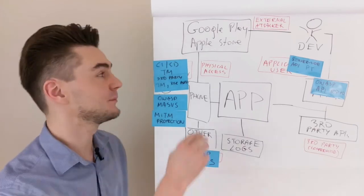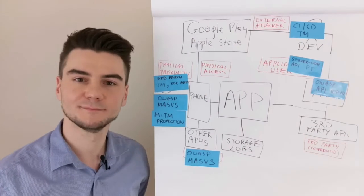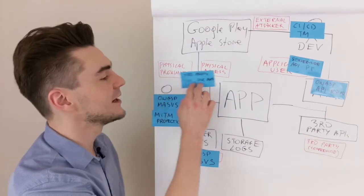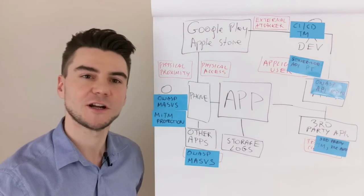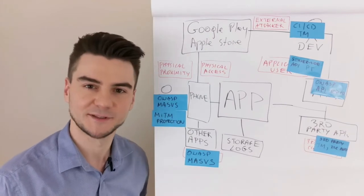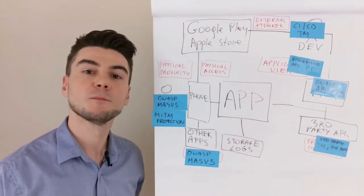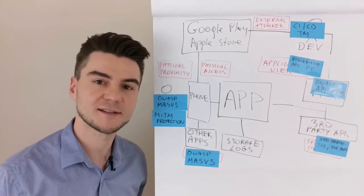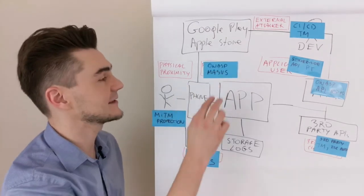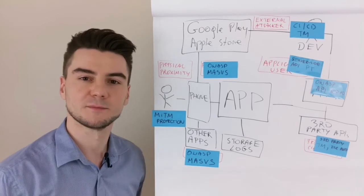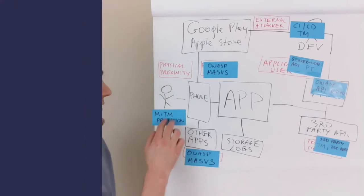Your CI-CD pipeline requires a threat model. All connections to third parties require a review, penetration test, or at least a risk assessment. Again, Mobile Application Security Verification Standard to mitigate physical access attacks. Man-in-the-middle protection against physical proximity attacks.